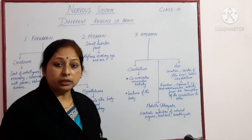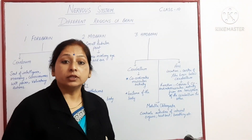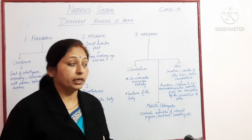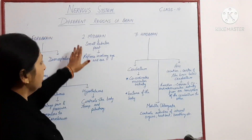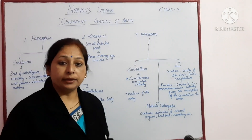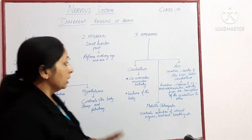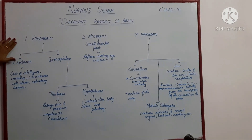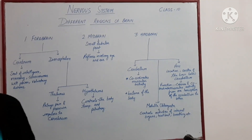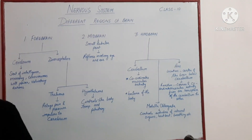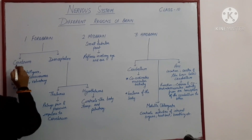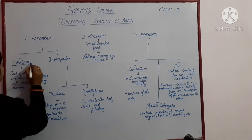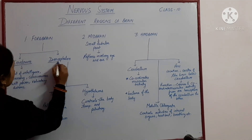The brain is divided into three regions: forebrain, midbrain, and hindbrain. Let's start with the first one, which is forebrain. Forebrain has two regions: one is cerebrum and the other one is diencephalon.